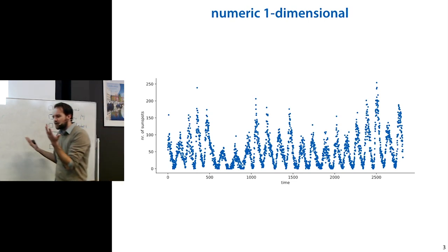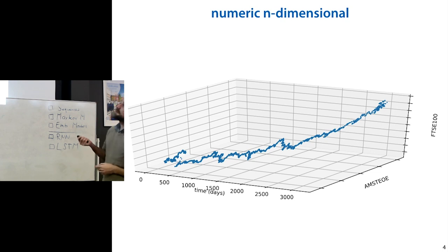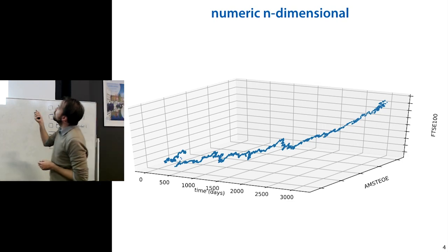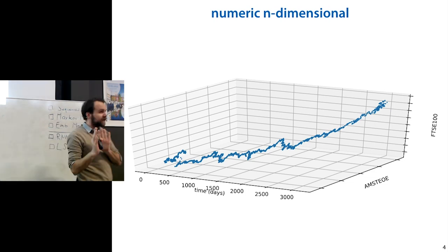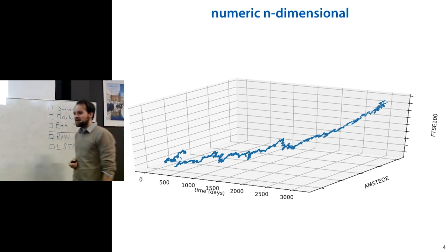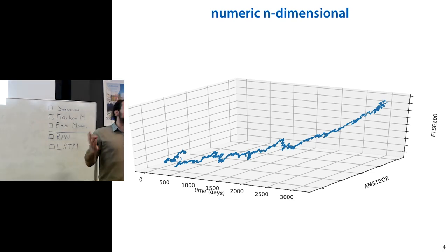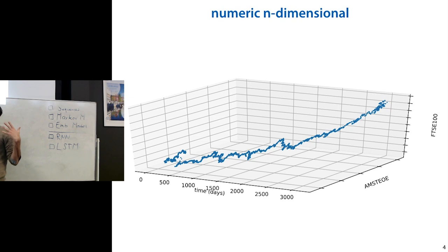Sequences can be multi-dimensional as well. The analog of having multiple features is that for every point in time you observe multiple numeric values. For instance, if you look at two indices — the Amsterdam exchange and the FTSE 100 — they both produce a number every day, so for every timestamp you have two numbers. That's an n-dimensional, in this case two-dimensional, time series. It's the analog of a dataset with numeric features, except the instances are ordered in time.